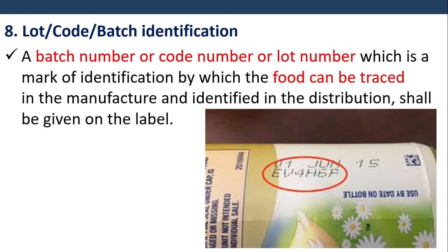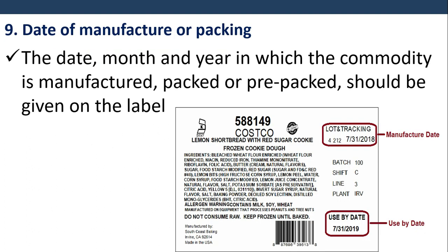Lot or code or batch identification: A batch number, code number, or lot number — which is a mark of identification by which the food can be traced in manufacture and identified in distribution — shall be given on the label. The date, month and year in which the commodity is manufactured, packed or pre-packed should also be given on the label.